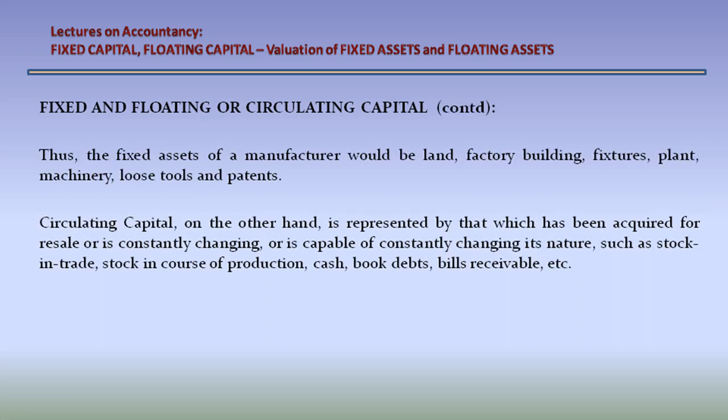Thus, the fixed assets of a manufacturer would be land, factory building, fixtures, plant, machinery, loose tools, and patents.